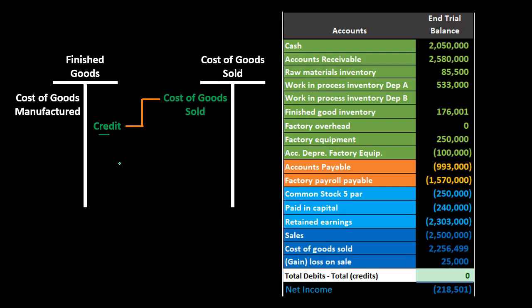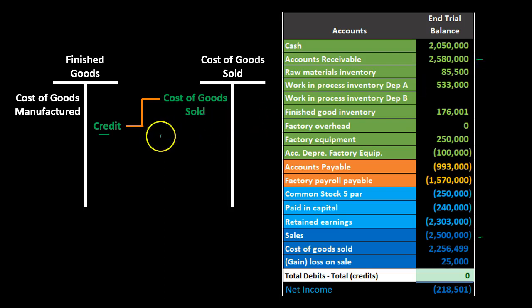When we sell the finished goods, we take them out of finished goods. We credit Finished Goods and debit Cost of Goods Sold. There are actually two things happening simultaneously at the point of sale: this cost recording entry, and a separate revenue entry where accounts receivable increases and sales revenue increases.